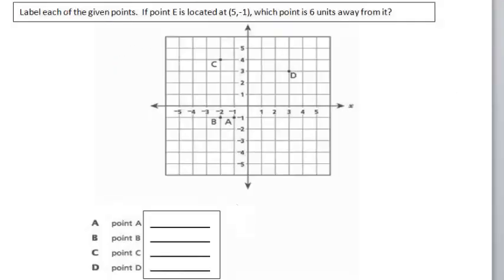In this example, I'm asked to label each of the given points, and then they ask me: if point E is located at 5, negative 1, which point is 6 units away from it? First things first, let's go ahead and label each point.